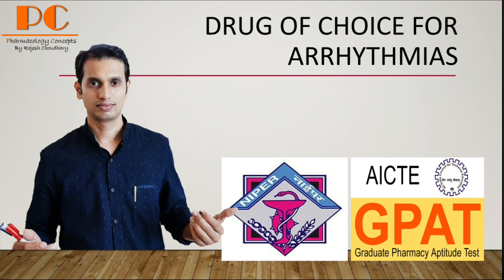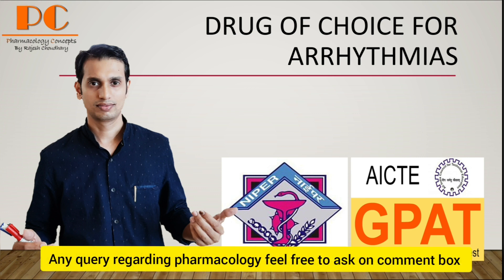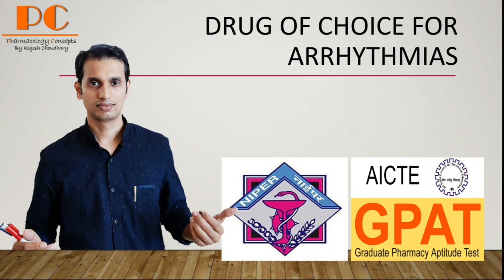First, we should know what arrhythmia is. Arrhythmia means disturbance in the cardiac rhythm — either faster, like tachyarrhythmia, or slower, like bradyarrhythmia. If your heart rate is growing irregularly, we can talk about arrhythmia. Various types of arrhythmia occur in the body and they can be treated by several drugs. So let's start the topic.